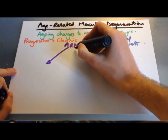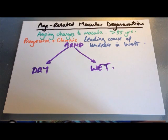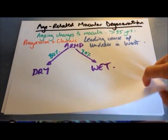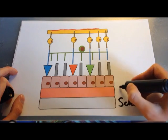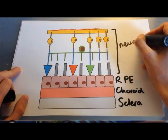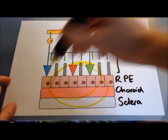Back to age-related macular degeneration. There are two types: dry or atrophic macular degeneration, and wet or neovascular macular degeneration. 80% are dry and 20% are wet. Let's look at the layers of the eye: we have the sclera on the outside, then the choroid, then the retinal pigment epithelium, and broadly the neural retina, which includes photoreceptors, horizontal cells, ganglion cells, and nerve fibres. For macular degeneration we're interested in the choroid and retinal pigment epithelium.